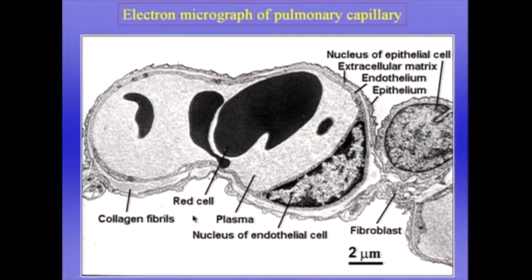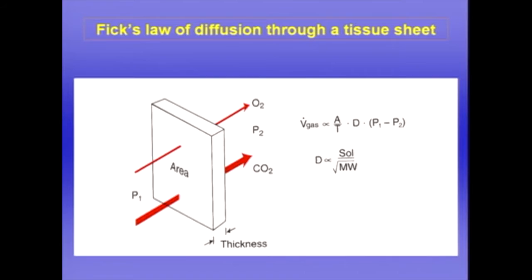Now we said that the barrier is extremely thin — a third of a micron in many places. And why is that? Well, that brings us to the principles of gas diffusion through a tissue sheet. The volume of gas which moves across the tissue sheet is proportional to the area of the sheet, proportional to a constant called the diffusion constant, and the difference in partial pressure between one side of the sheet and the other. It's also inversely proportional to the thickness of the sheet. So what this means is that we need as thin a sheet as possible and as large an area as possible. The blood gas barrier in the lung is phenomenally thin in much of its extent.